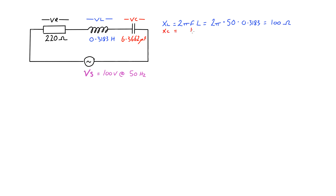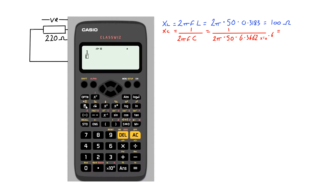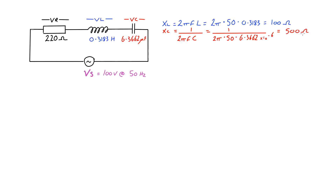Then we'll find the capacitive reactance, which is 1/(ωC) or 1/(2πfC). That's 1 over 2π times 50 hertz times 6.3662×10⁻⁶ farads, and that gives us 500 ohms for the capacitive reactance. The resistor is just 220 ohms.